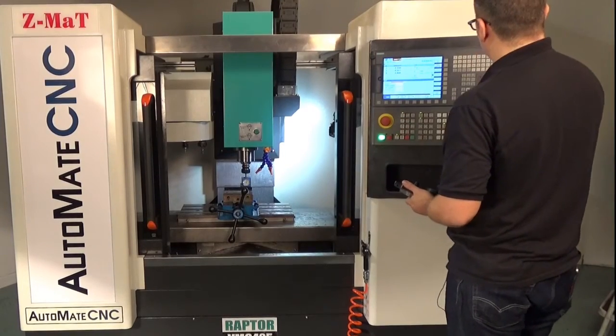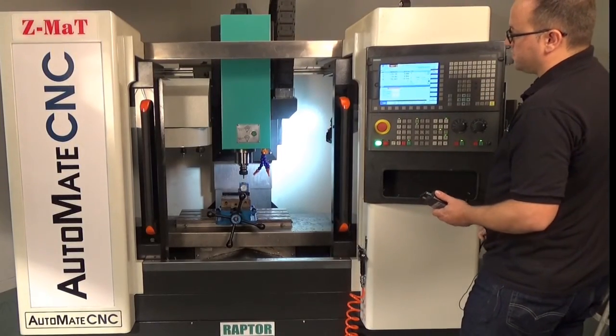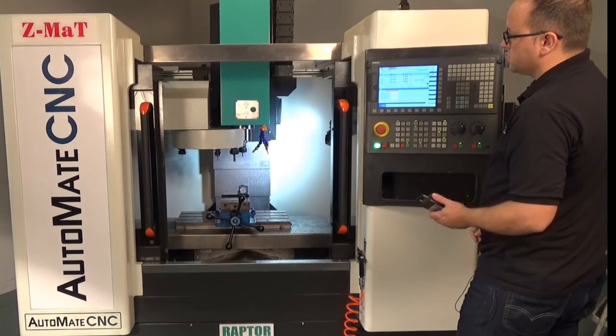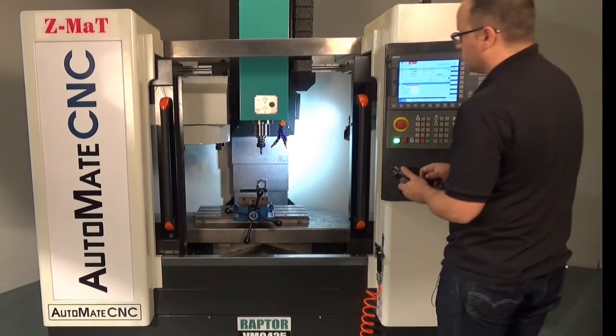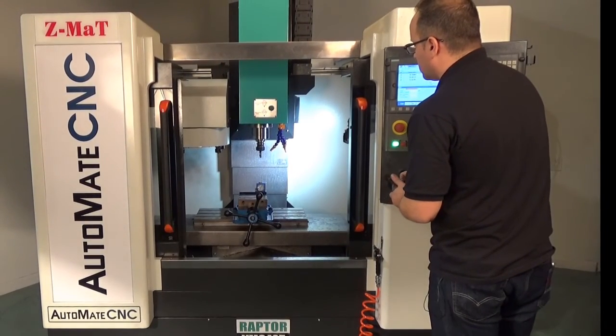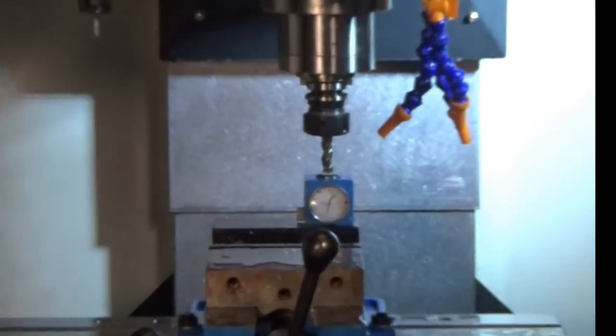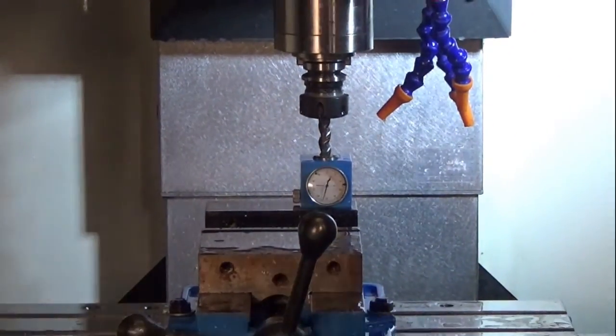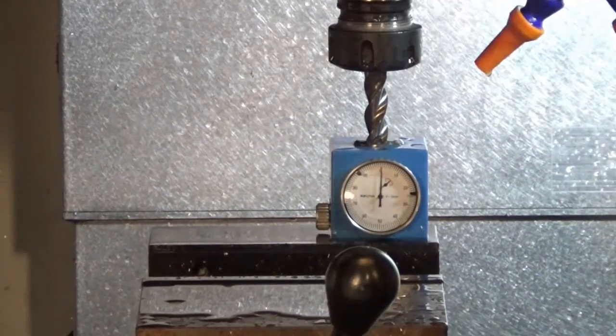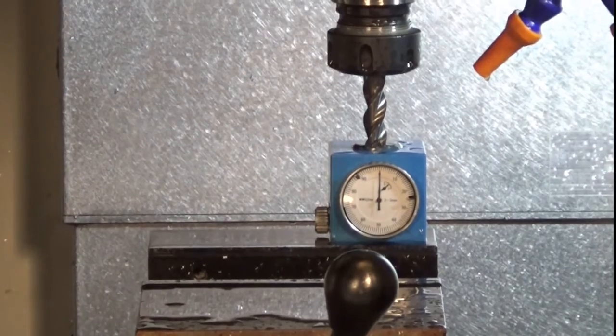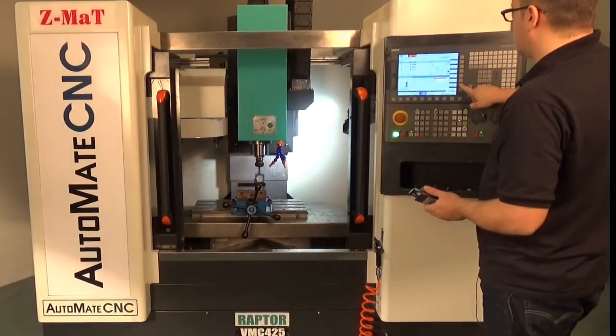This is the same for every tool. We'll call tool 2 now, cycle start. Jog the tool down in Z, measure tool length manually, set length.